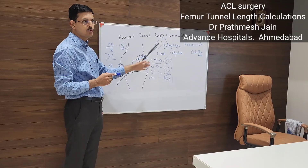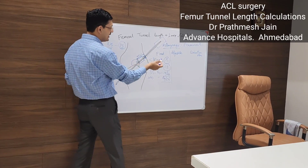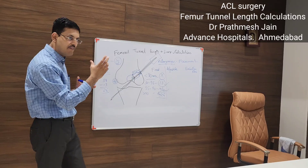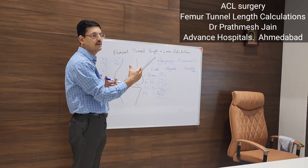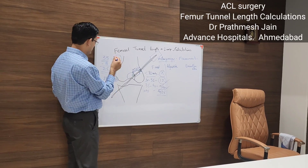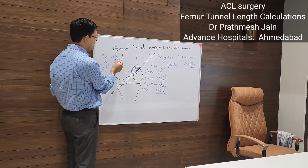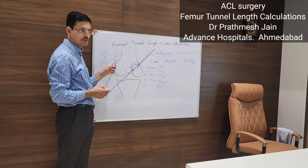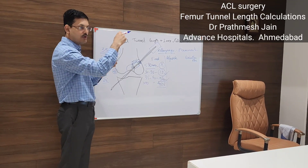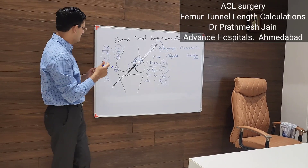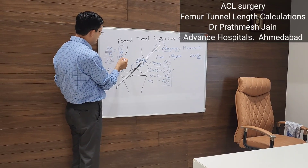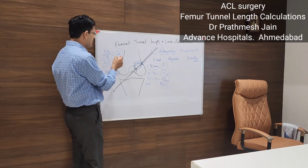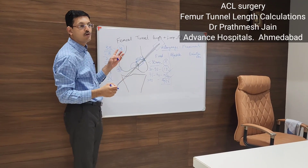This is the fixed loop button calculation. The most common sizes in the Indian scenario are 15 or 20 mm. For example, if you use a 15 mm button in a 33 mm tunnel, the graft inside the tunnel will effectively be 18 mm. You drill to 25 mm — the button flips and you pull back. The 7 mm flipping distance is essential.